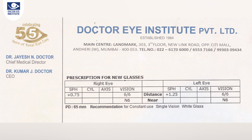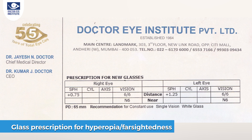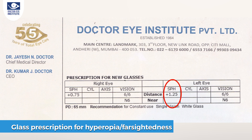I'm now going to show you a variety of prescription examples. The first prescription is for hyperopia, or farsightedness. The spherical number for the right eye is plus 0.75, and for the left eye it is plus 1.25. This means the patient's distance prescription is plus 0.75 in the right eye and plus 1.25 in the left eye.